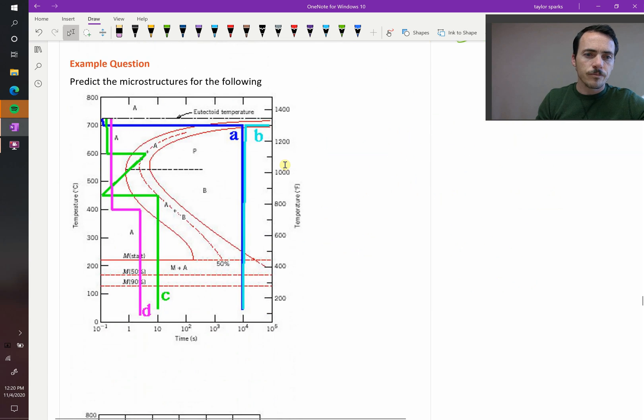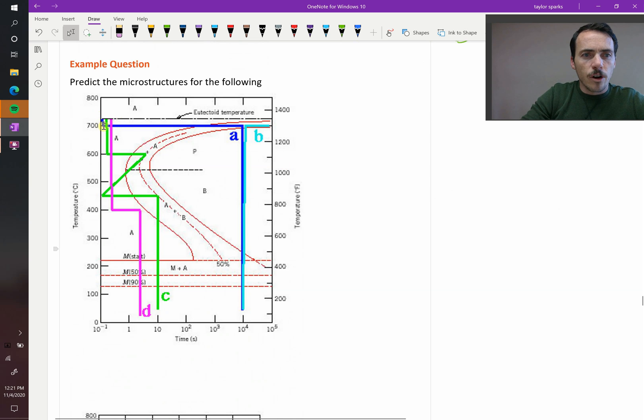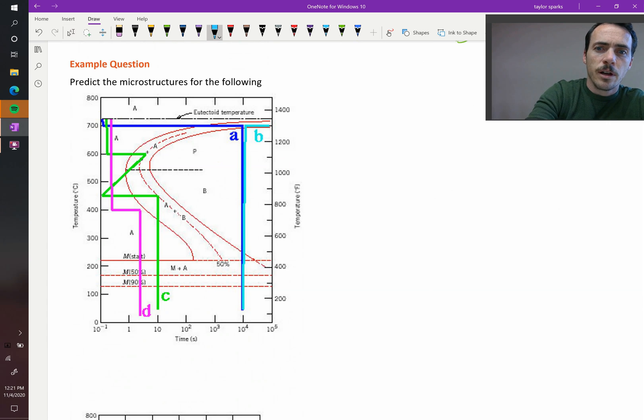How about this one? Let's do number A. A is this dark blue line where we hold it for a long time. To me, it looks like maybe past 50%, maybe 75% of the way or so. And then you quench it down through this martensitic transition. So for A, what I would expect from this, I would expect for A that you have maybe 75% perlite and 25% martensite. That's what I would expect.